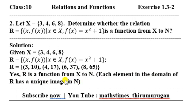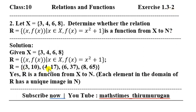Each element in the domain of R has a unique image. So here we go through the elements: 3, 4, 6, 8. The first set is X, and the second set contains 3, 4, 6, and 10.